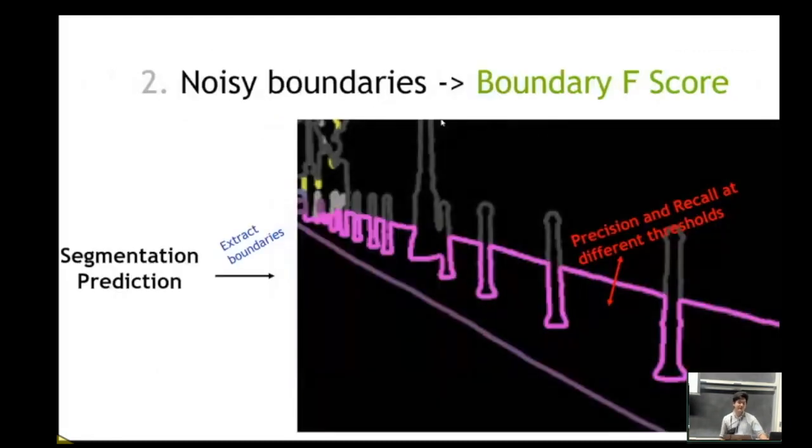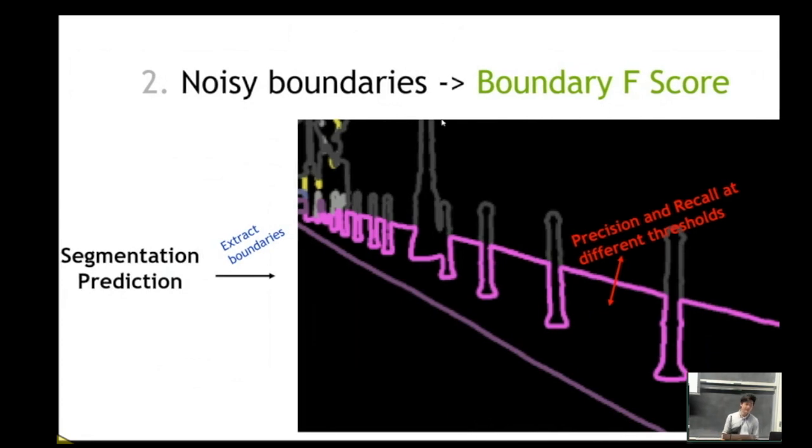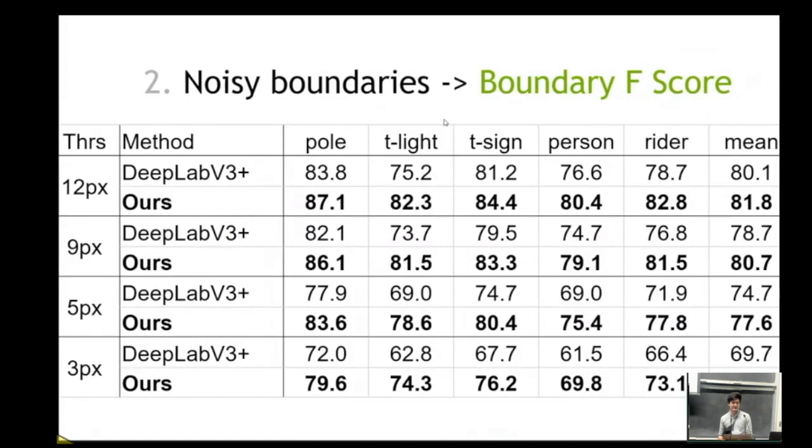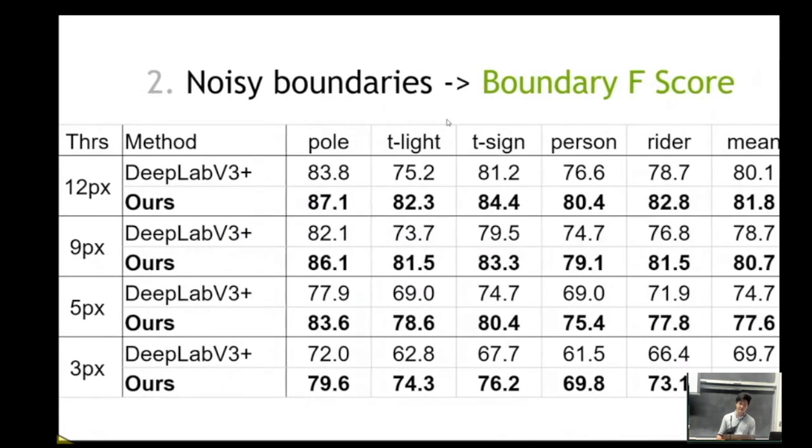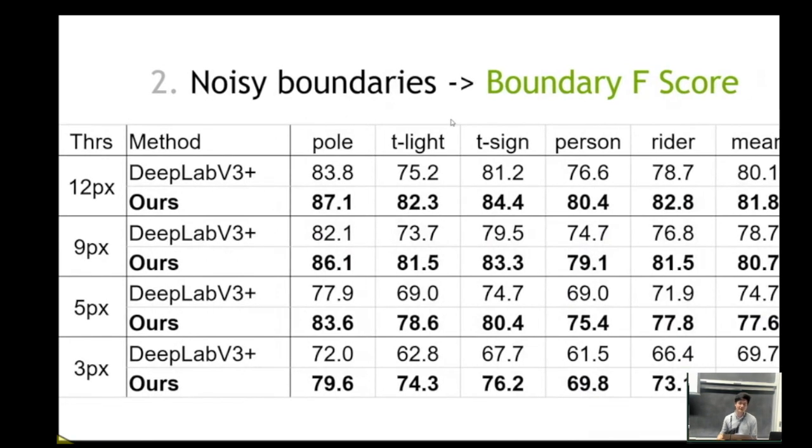Second, we also have the boundary evaluation. So we compute this by first converting our semantic segmentation predictions to an edge map, and then comparing against ground truth edges by using precision over recall per class. We also evaluate this at different thresholds, which gives different slack in the evaluation process. So we see here at the strictest regime at three pixels, we get close to a four percent upgrade. This also means that our boundaries are in fact much better aligned than DeepLab.